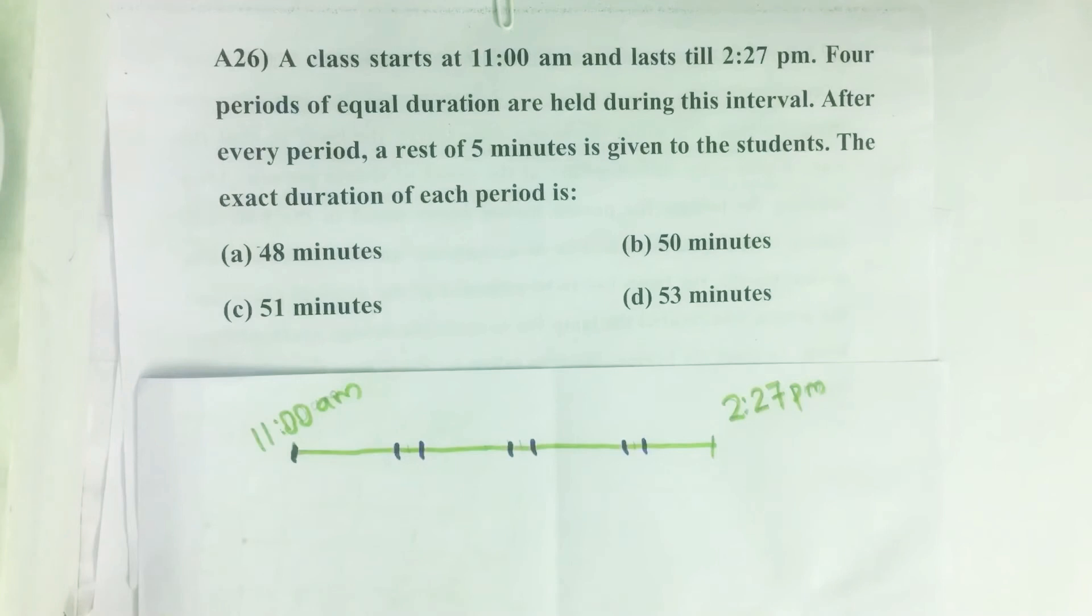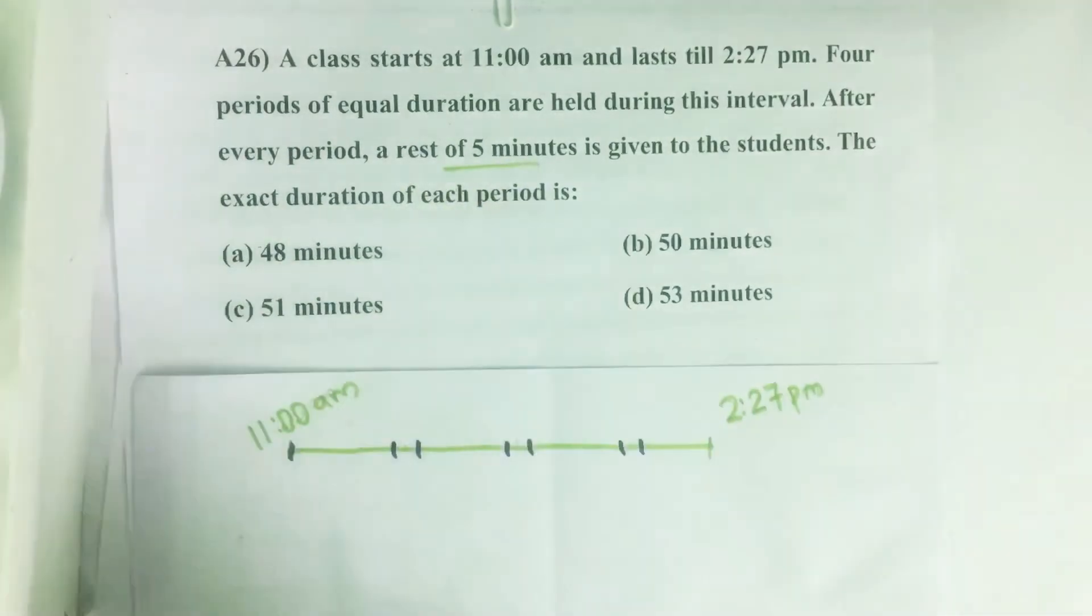Four periods of equal duration are held during this interval. After every period, a rest of five minutes is given to the students. The exact duration of each period is what we need to find.